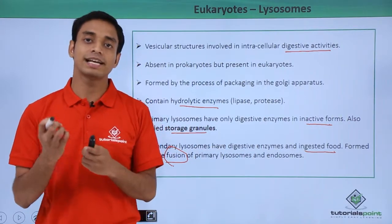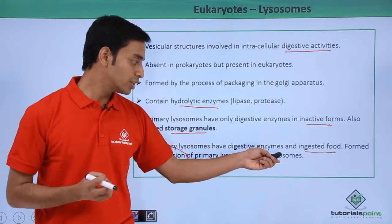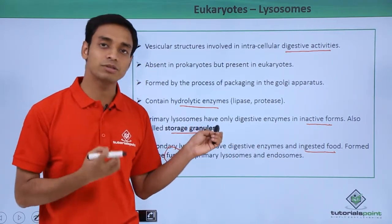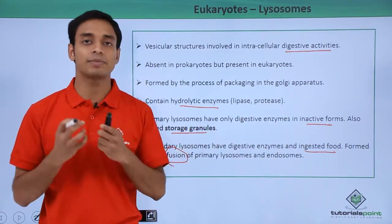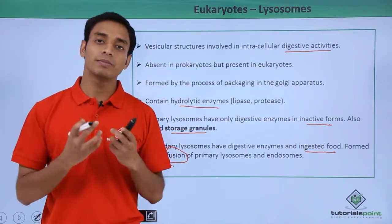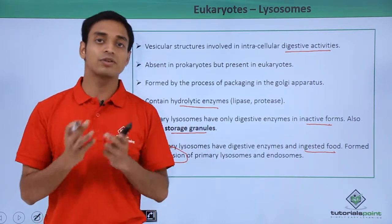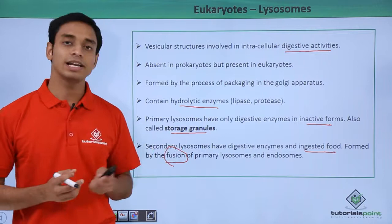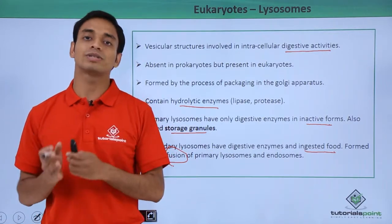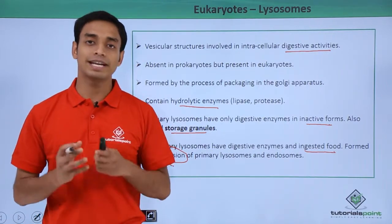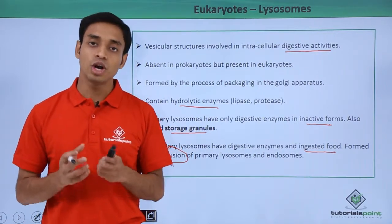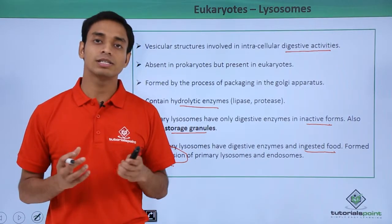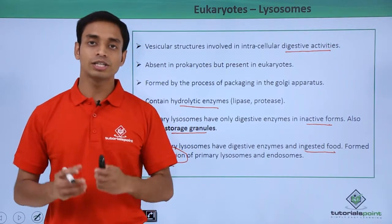Endosomes contain acidic materials inside them. Because of these acids, the digestive enzymes present inside the primary lysosomes transform into the active form, creating secondary lysosomes. Secondary lysosomes help in digestion of food as well as killing of microorganisms or foreign particles.